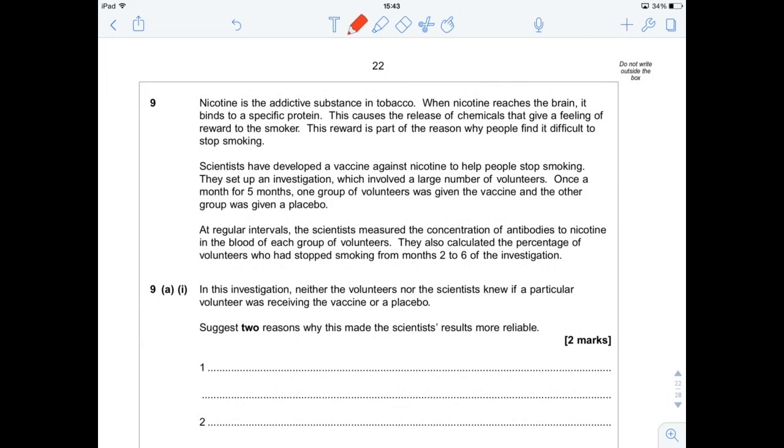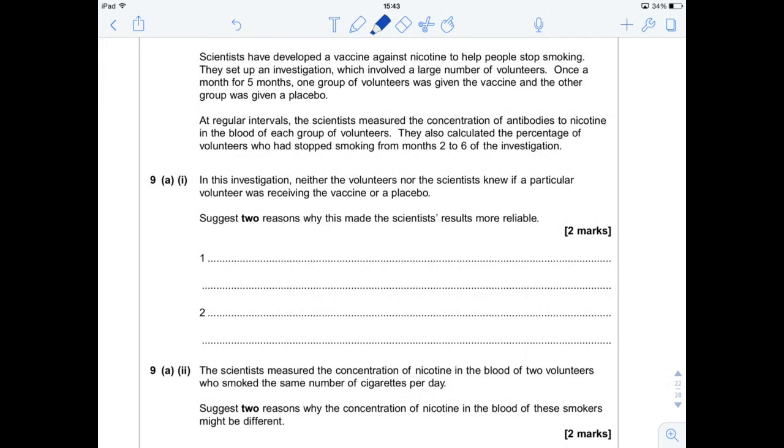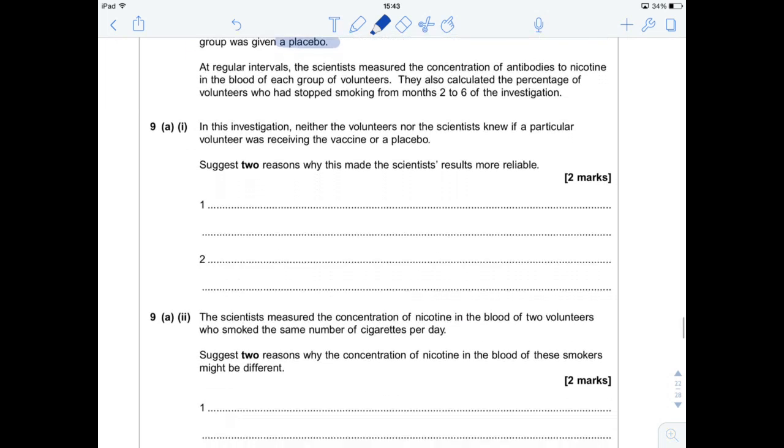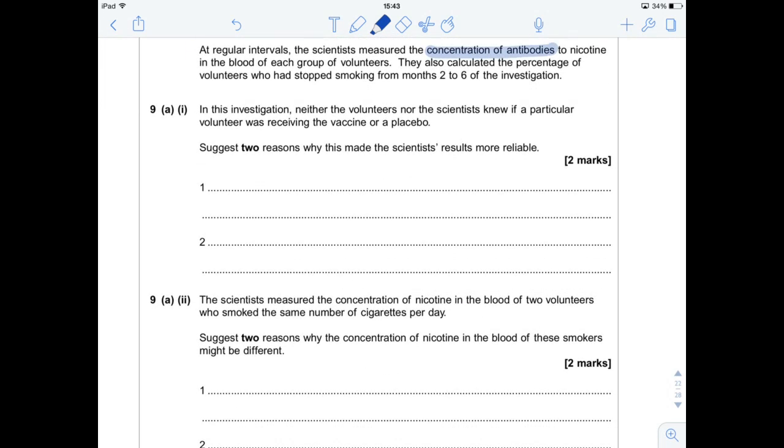This one's about nicotine and what nicotine does essentially. So we're going to read through this section of text and pick out key bits. Nicotine is the addictive substance in tobacco. When nicotine reaches the brain, it binds to a specific protein. This causes the release of chemicals that give a feeling of reward to the smoker. This reward is part of the reason why people find it difficult to stop smoking. Scientists have developed a vaccine against nicotine to help people stop smoking. They set up an investigation which involved a large number of volunteers. One group of volunteers was given the vaccine, the other group was given a placebo. At regular intervals, the scientists measured the concentration of antibodies to nicotine in the blood of each group of volunteers. They also calculated the percentage of volunteers who had stopped smoking from months two to six.